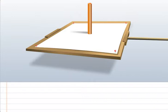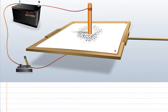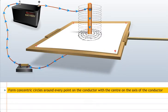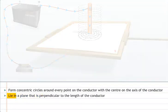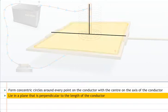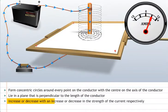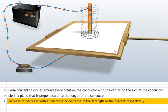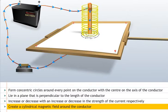In general, magnetic field lines around a straight current carrying conductor form concentric circles around every point on the conductor with the center on the axis of the conductor. They lie in a plane that is perpendicular to the length of the conductor. They increase or decrease with an increase or decrease in the strength of the current respectively, and create a cylindrical magnetic field around the conductor.